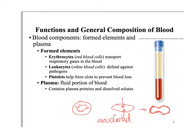The other formed elements include leukocytes — your white blood cells. There are five types: neutrophils, lymphocytes, monocytes, eosinophils, and basophils. We'll go over those on Wednesday. Platelets are cellular fragments, also called thrombocytes. They result from cells breaking up and essentially exploding, and those little bits remain within the blood.